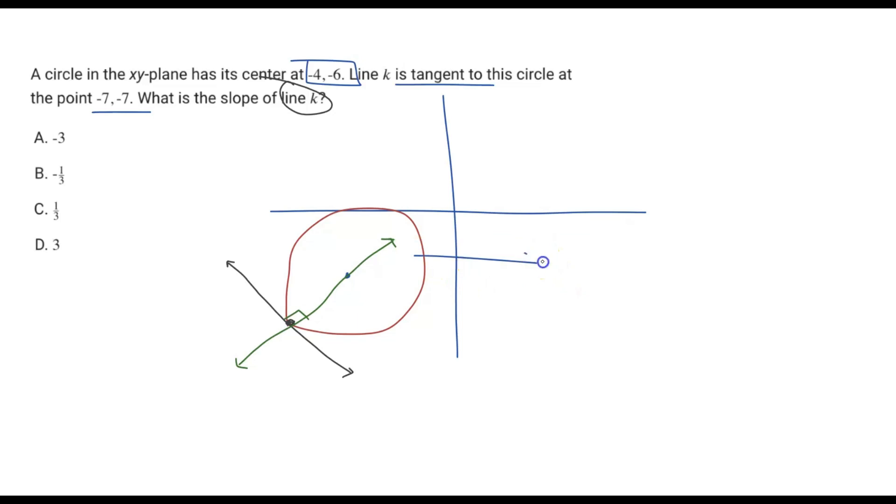The slope of the green line is going to be based on these two coordinate points. The equation is going to be (y₂ - y₁) / (x₂ - x₁). Let's look for the change in y. The change in y, going from (-7, -7) to (-4, -6), is from -7 to -6, which is a change of positive 1.